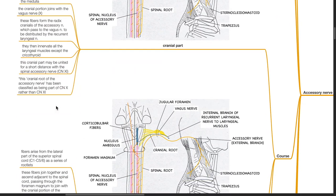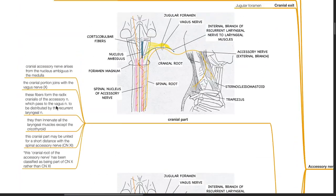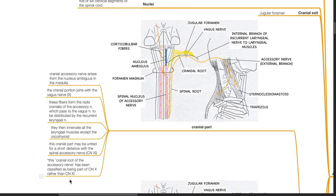Course of the accessory nerve: there is a cranial part and a spinal part. The cranial root of the accessory nerve has been classified as being part of the vagus nerve rather than the accessory nerve. The cranial accessory nerve arises from the nucleus ambiguus in the medulla. The cranial portion joins with the vagus nerve — these fibers form the radix cranialis of the accessory nerve, which passes to the vagus nerve to be distributed by the recurrent laryngeal nerve, innervating all laryngeal muscles except the cricothyroid. This cranial part may be united for a short distance with the spinal accessory nerve.